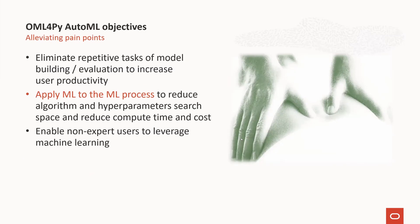Next, we'll discuss Automatic Machine Learning, or AutoML. Our objectives for OML4Py AutoML are to eliminate repetitive tasks such as model building and evaluation through automation, with the goal to increase user productivity for both expert data scientists and non-experts. AutoML applies machine learning to the machine learning process itself, using what we call meta-learning to automatically zero in on the right algorithm, features, and algorithm settings necessary to build high-quality models, without resorting to exhaustive search. Such automation helps to make machine learning more accessible to a broader audience, while reducing the compute time and cost required to get the desired result.